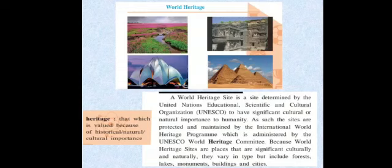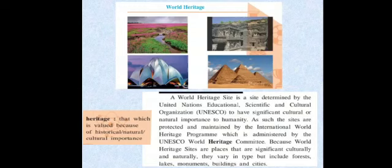They are either naturally, historically, or culturally important for human beings. The first is the karst plateau, which is naturally important. The second is the Temple of Kailash, which is present in Ajanta Ellora caves. The third is the Opera House of Sydney. And the next one is the Pyramids from Egypt. These kinds of places, which have some significance, are administered, protected, and maintained by the World Heritage Site program.